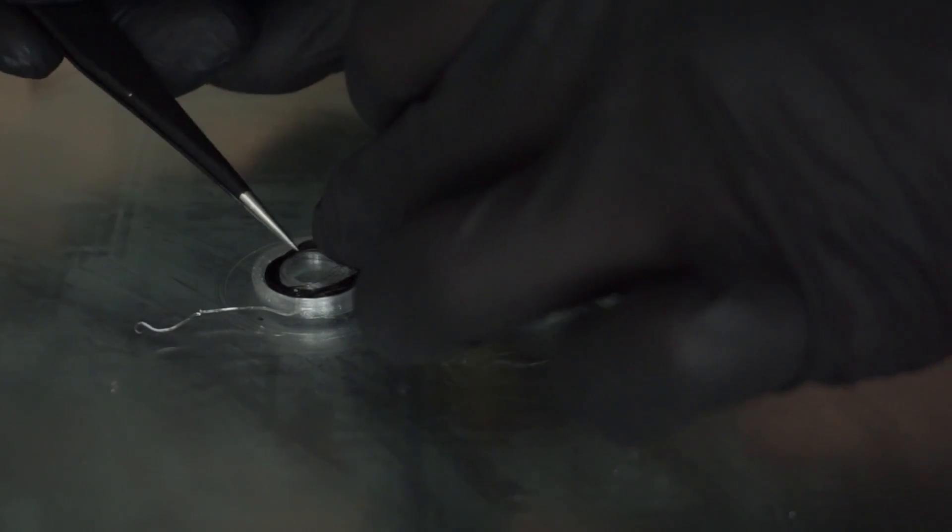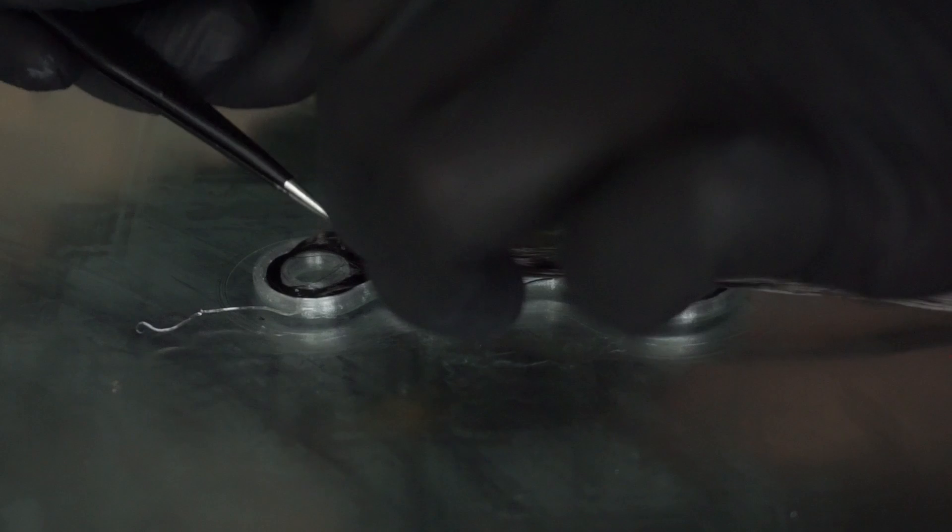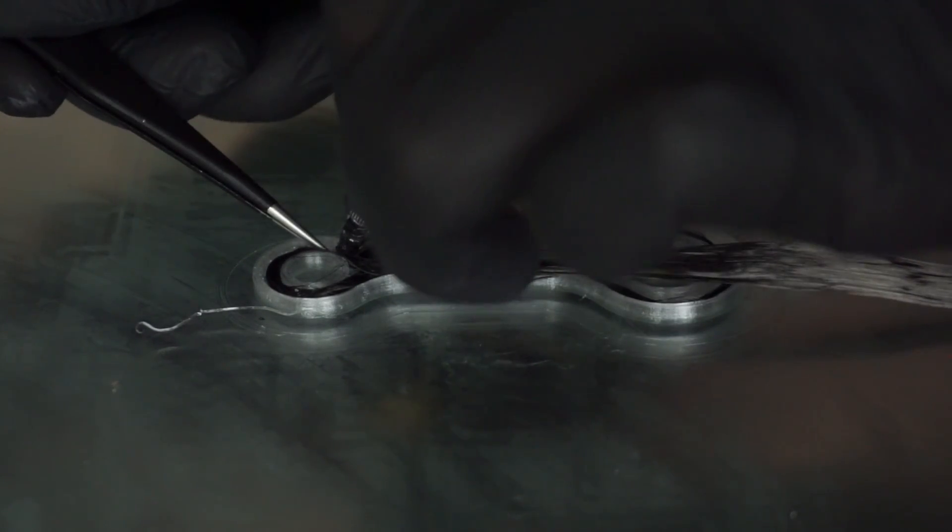Instead of the roving I used, you could also use a carbon fiber fabric, cut it into the size of your part, and insert it during the print.